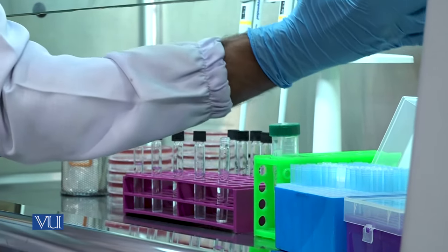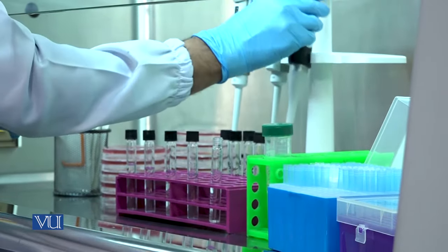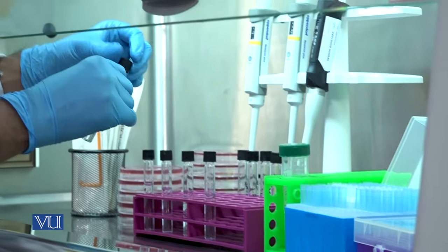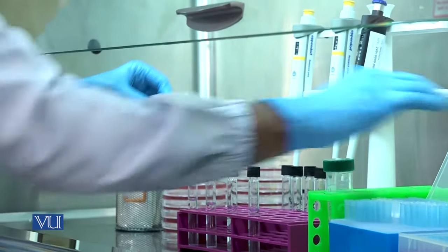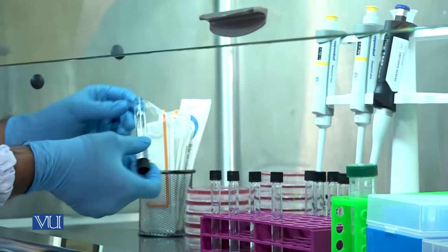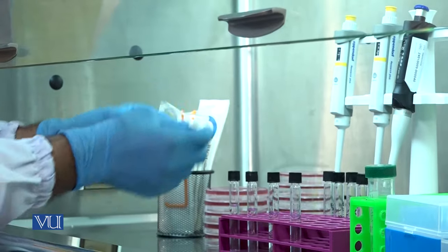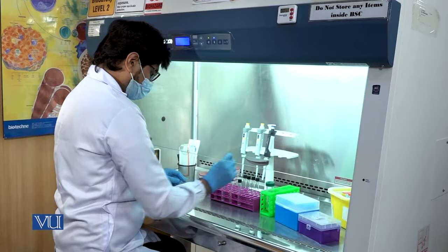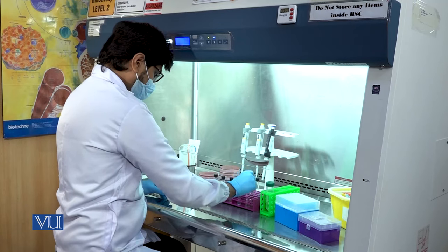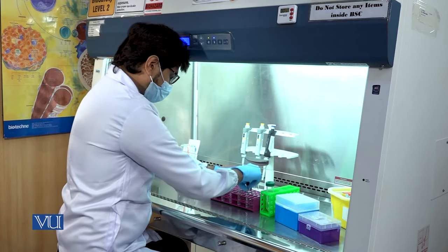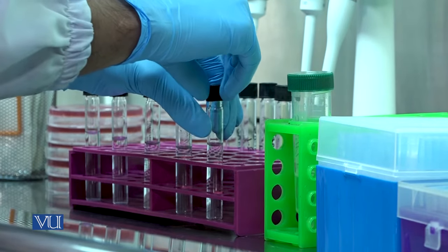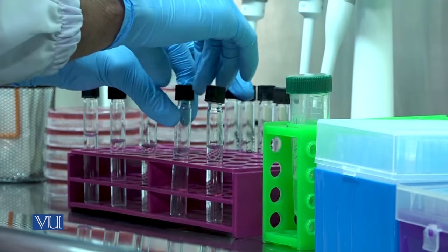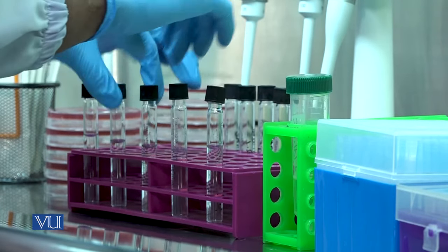Discard the pipette tip and tightly close the glass tube to mix the content. After mixing, put the glass tube back into the rack and loosen the caps of the remaining glass tubes containing 0.9 percent sterile saline solution to make further dilutions.